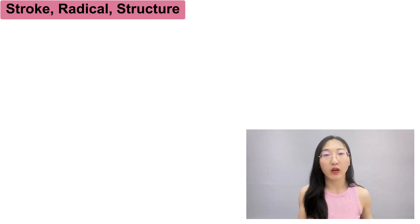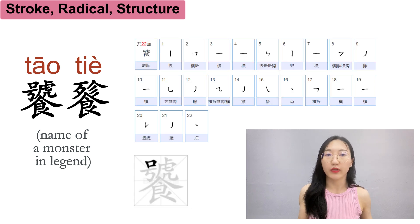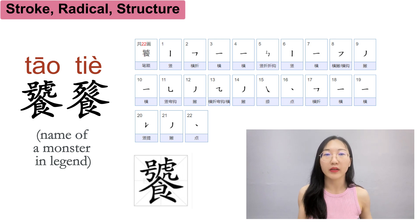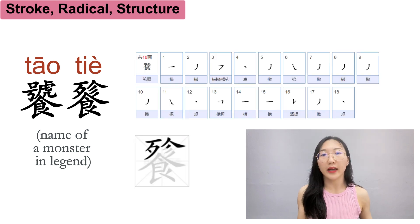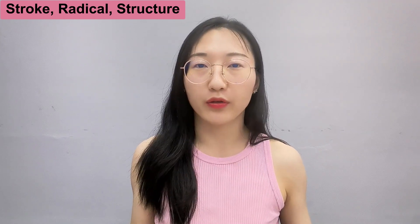Some characters may have over 20 strokes, like 饕餮 (tāotiè). It's actually a phrase combining two characters, each with over 20 strokes. This phrase stands for a cruel monster in legend, but is also used as a metaphor for people who are greedy for food. But don't be scared — these complicated characters are not common.